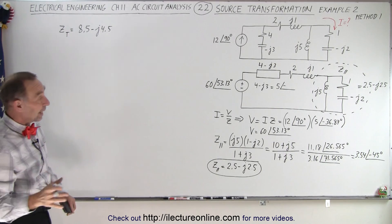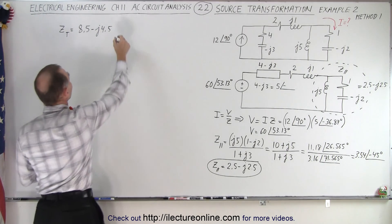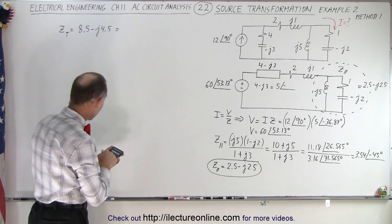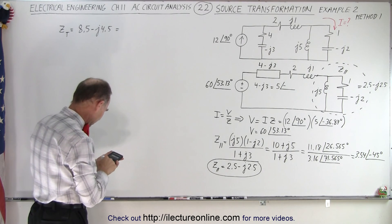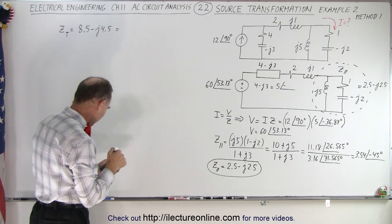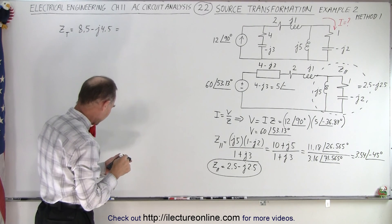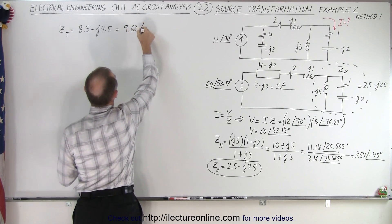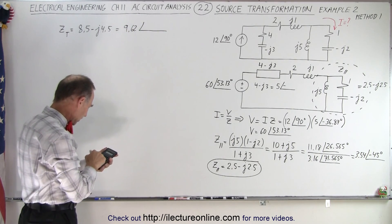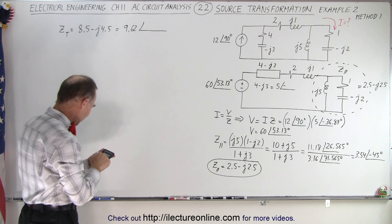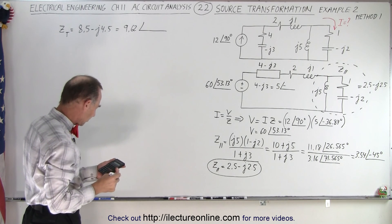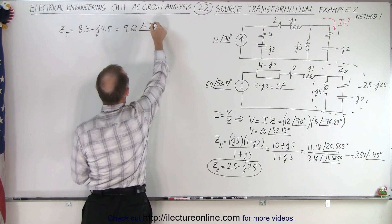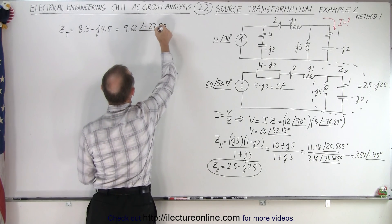Now I want to convert that to magnitude and phase angle format. The square root of 8.5 squared plus 4.5 squared gives 9.62. The phase angle is the inverse tangent of 4.5 divided by 8.5, which is minus 27.90 degrees. So the total impedance is 9.62 with a phase angle of minus 27.90 degrees.